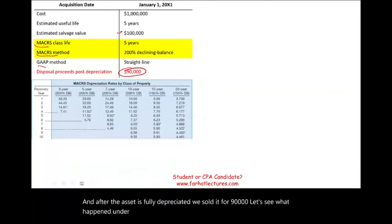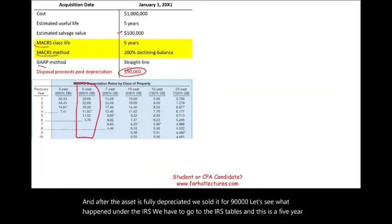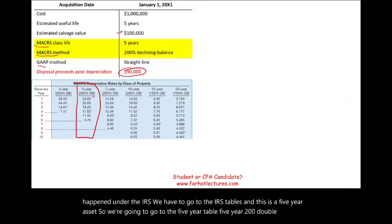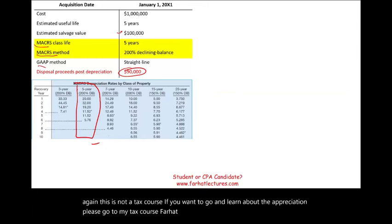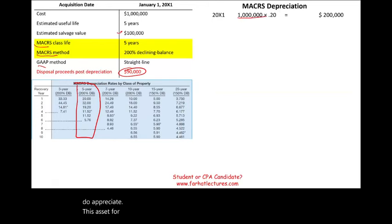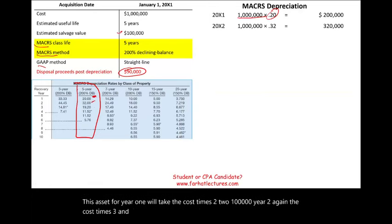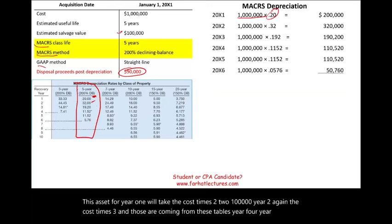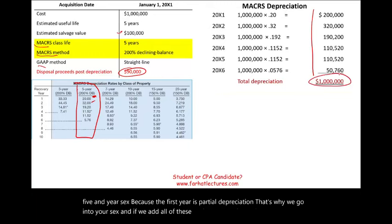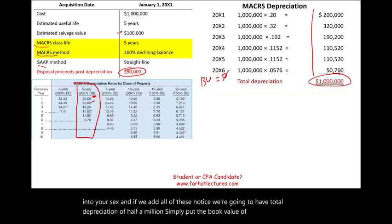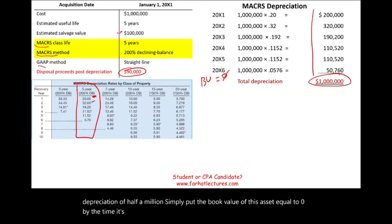Under the IRS, we go to the IRS tables for the five-year, 200% double declining balance, and use those rates to depreciate the asset. For year one, cost times 0.20 equals $200,000. Year two, cost times 0.32, and so on — those rates come from the IRS tables. We go through year six because the first year is partial depreciation. Total depreciation equals $1 million, so the book value equals zero when fully depreciated, because we depreciate everything under MACRS.